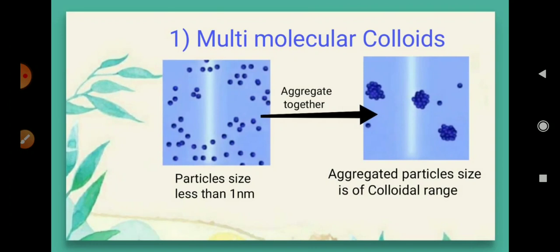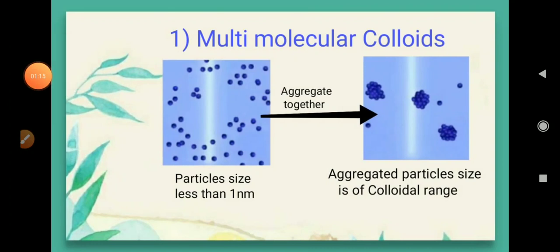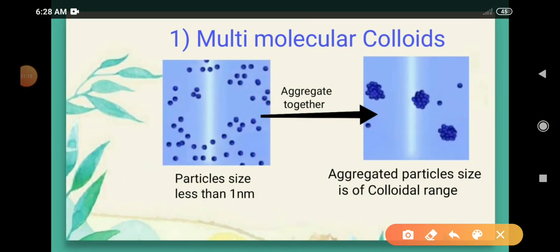The first one is multi-molecular colloids. Multi means many — many numbers of molecules actually get aggregated to form a colloidal size particle. Look at the picture: here the particle size is less than one nanometer. That means they are not of colloidal range. But when these particles start to aggregate with each other, they form a bigger size particle which has a size in the colloidal range.